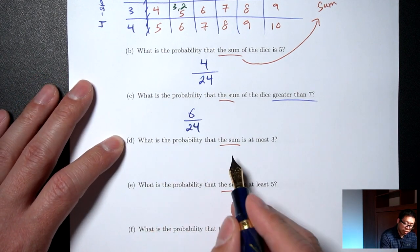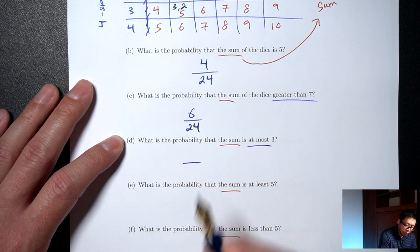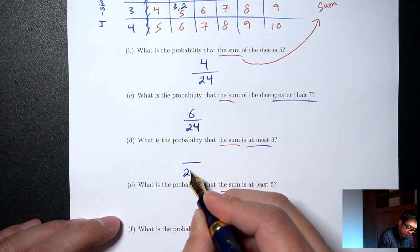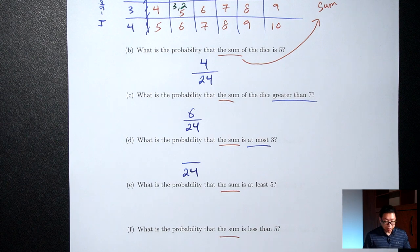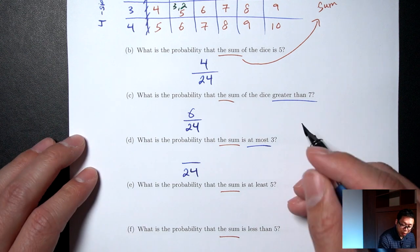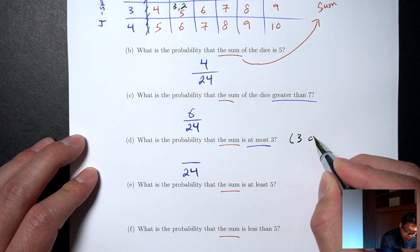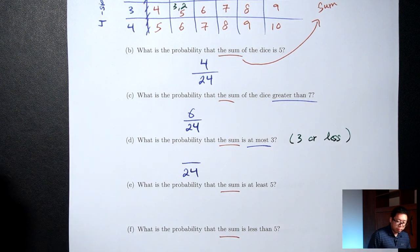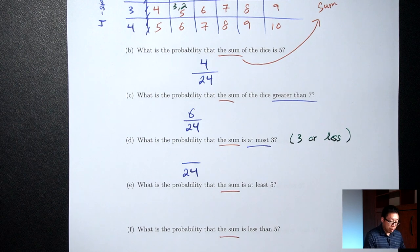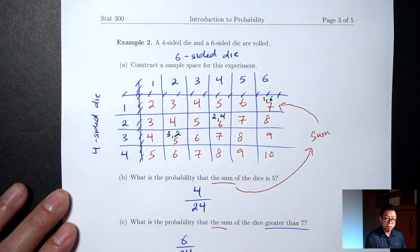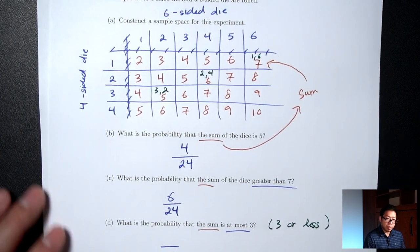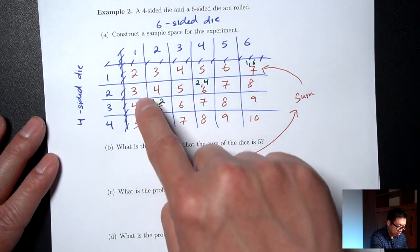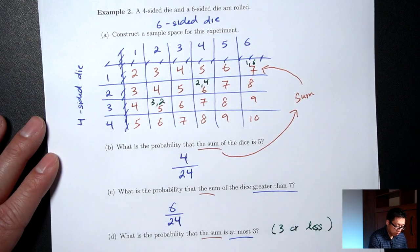Part D: what's the probability that the sum is at most 3? Bottom is 24. At most 3 means the biggest it could be is 3 — in other words, 3 or less. That would be the 2s and 3s in the table: 1+2 = 3 outcomes. Probability is 3/24.